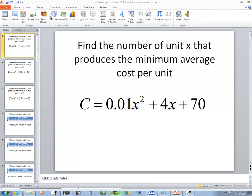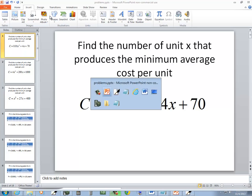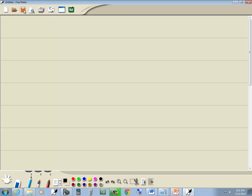Let's take a look at this problem. We want to find the number of units x that produces a minimum average cost per unit, and if we come up decimals, round like normal.